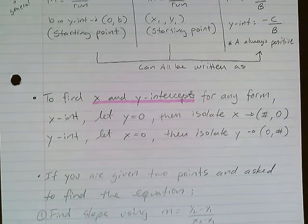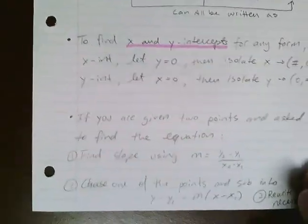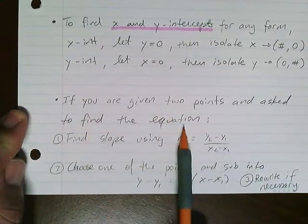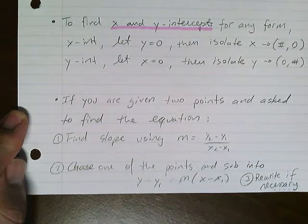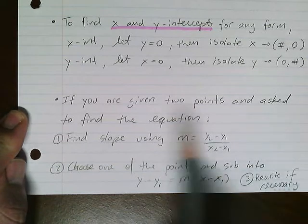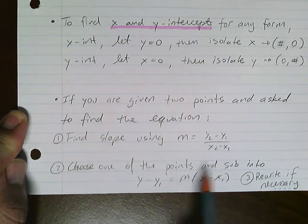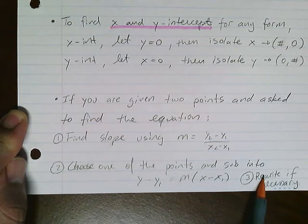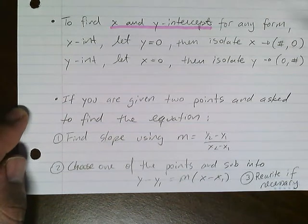If you're given two points and asked to find the equation, the first thing to remember is what you need for an equation: the slope every time, and you need another point. Find the slope using the equation, then choose one of the points and substitute them into this equation. Rewrite if necessary - if they ask for y-intercept you have to keep going, if they ask for general you have to keep going from this. Don't forget that...